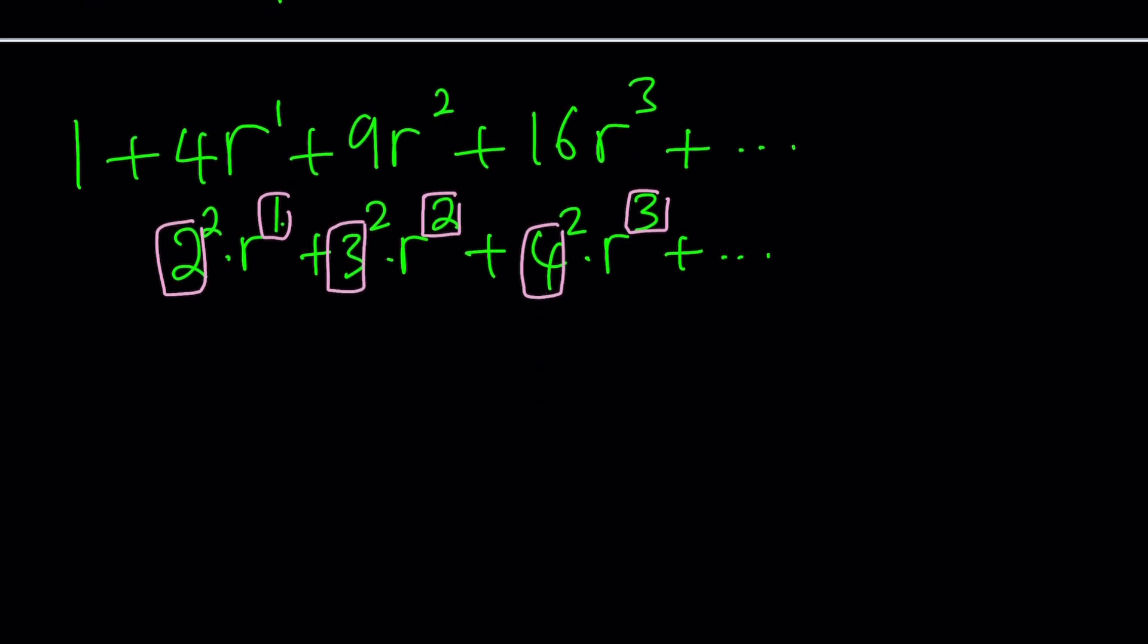So how do you express this using sigma notation? That is a very critical part because that's going to give me an idea about how I can solve this problem. The first one can be written as 1 to the second power multiplied by R to the power 0. We can write it as sigma n equals 1 to infinity, n squared times R to the power n minus 1. Once you write this, the rest is going to be fairly easy.